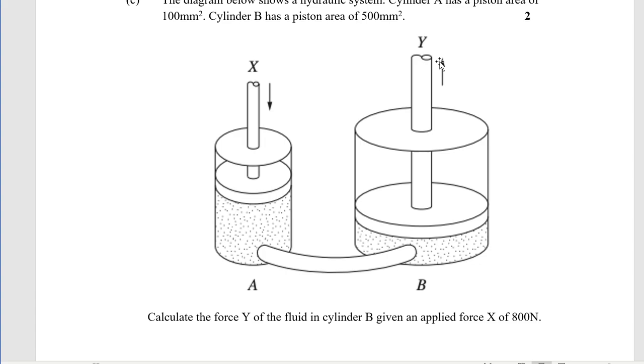Pascal's principle. They've given us the areas. The area ratio is Y is five times bigger than X, so that means that the force at Y is going to be five times bigger than the force at X. If they told us it's 800 newtons being applied at X, we're going to get five times as much, so 800 times 5 is 4000.